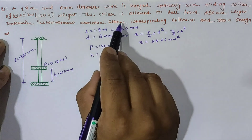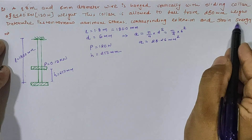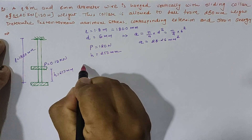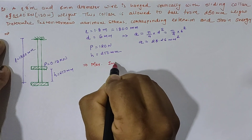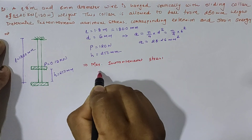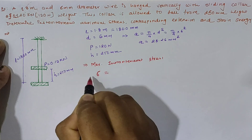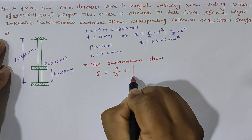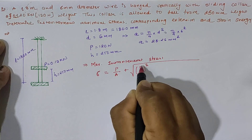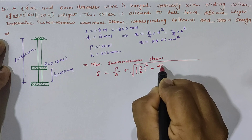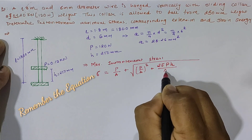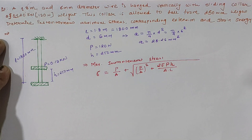We have to calculate the instantaneous maximum stress, corresponding extension, and energy stored as strain energy. The maximum instantaneous stress can be calculated by the equation: σ = P/A + √[(P/A)² + (2E × P × h) / Volume], where volume equals A × L.